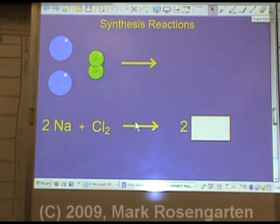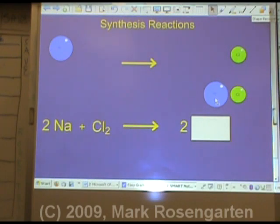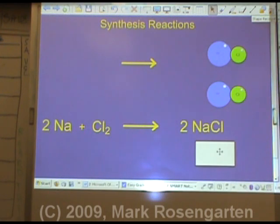Here's an example of a synthesis reaction. We have two Na's. We have Cl2. Notice how the Cl's are bonded together. When they react, the Cl2 breaks apart. And the Na's, plus one and Cl minus one bond. Na and Cl bond, giving us two NaCl's, the balanced reaction.